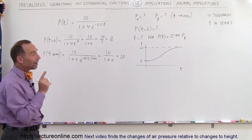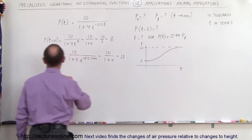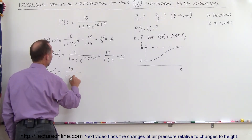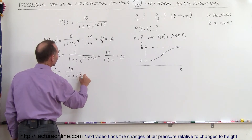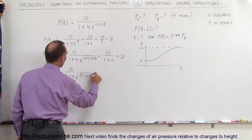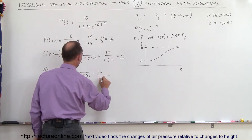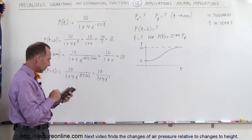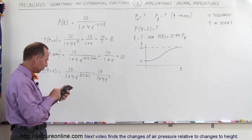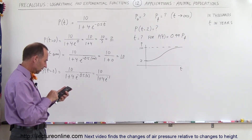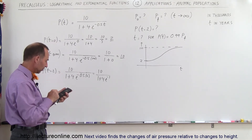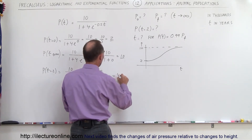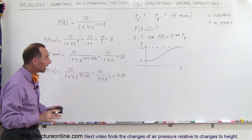Now we find the population after two years. P(2) equals 10 divided by (1 plus 4 times e to the minus 0.5 times 2), which is 10 divided by (1 plus 4e to the minus 1). Using a calculator: the exponent is negative 1, times 4, plus 1, take the inverse, multiply by 10. We get approximately 4.05, meaning about 4,050 deer after two years.